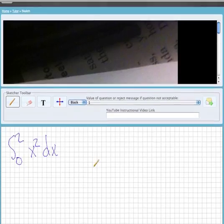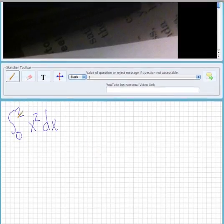So we're evaluating x squared and taking the integral of it from 0 to 2. The first thing we want to do is take the antiderivative of x squared.